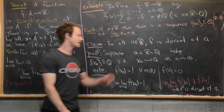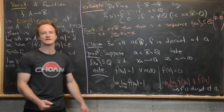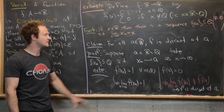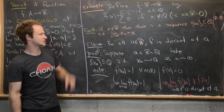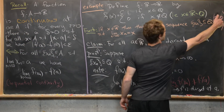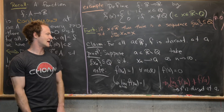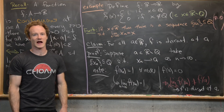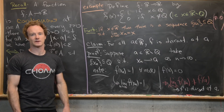So f is discontinuous at every irrational number. I'll leave it to you to use the other version of the density fact — that every real number is a limit of irrational numbers — to show that f is discontinuous at every rational number as well. And that's a good place to stop.